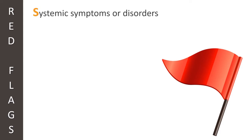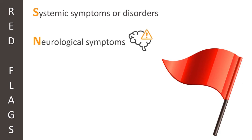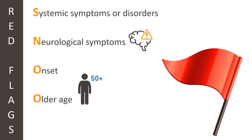Red flags in the history and exam that suggest a secondary headache disorder fall within the helpful mnemonic SNOOP. S stands for systemic symptoms or disorders. N stands for neurologic symptoms, including focal neurologic findings on exam. One O stands for onset, specifically sudden onset, which when severe is called a thunderclap headache, seen in subarachnoid hemorrhage. The next O stands for older age, greater than 50. P stands for pattern change, such as episodic headaches that become daily. Other red flags are signs of increased intracranial pressure, like headaches that awaken one from sleep or papilledema on exam.